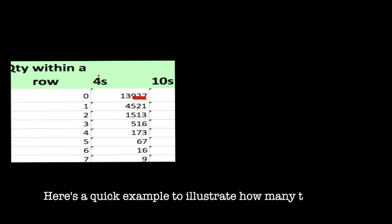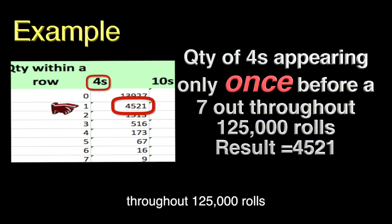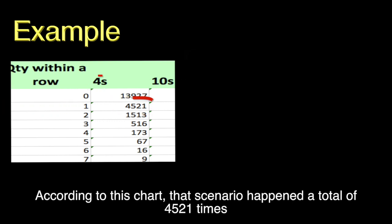Here's a quick example to illustrate how many times a four was rolled only once up until a seven out throughout 125,000 rolls. According to this chart, that scenario happened 4,521 times.